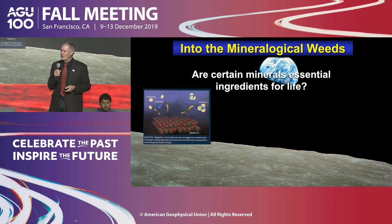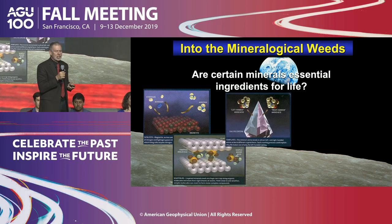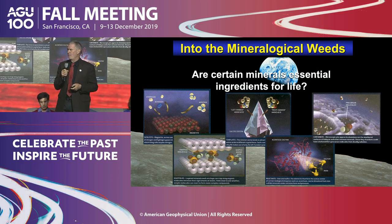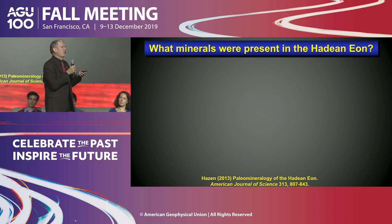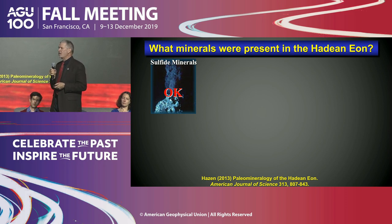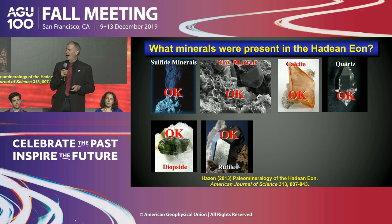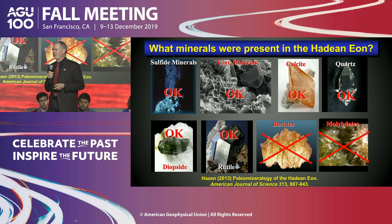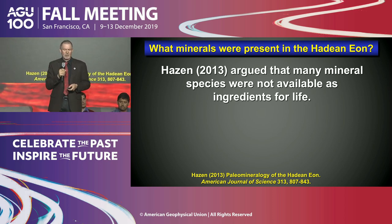From a mineralogical perspective, minerals may play essential roles as ingredients for life — as catalysts, scaffolds, templates to select and concentrate molecules, reactants, and containers. I asked in 2013: what minerals would have been present during the Hadean Eon? Many minerals invoked in the origin of life were certainly there — sulfide minerals, clay minerals, calcite, quartz. But I argued that borates and molybdates, which required specific redox conditions, were probably not present.